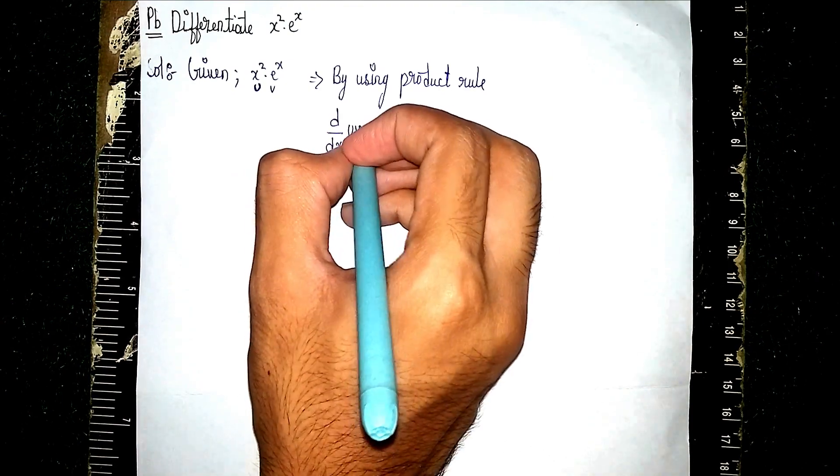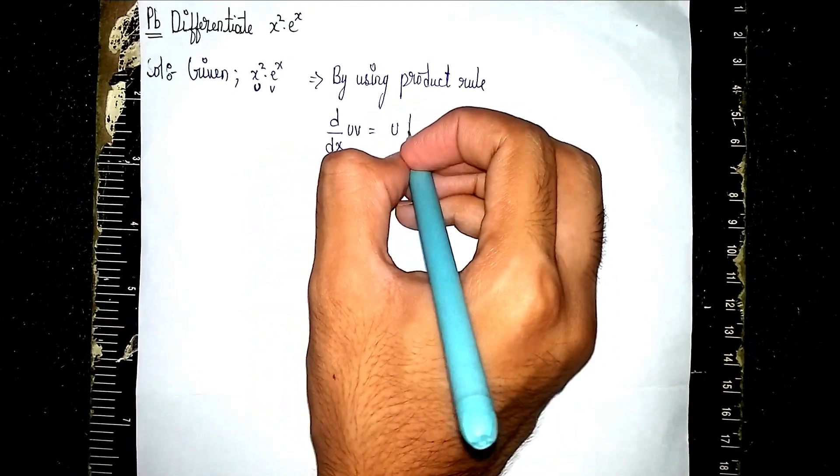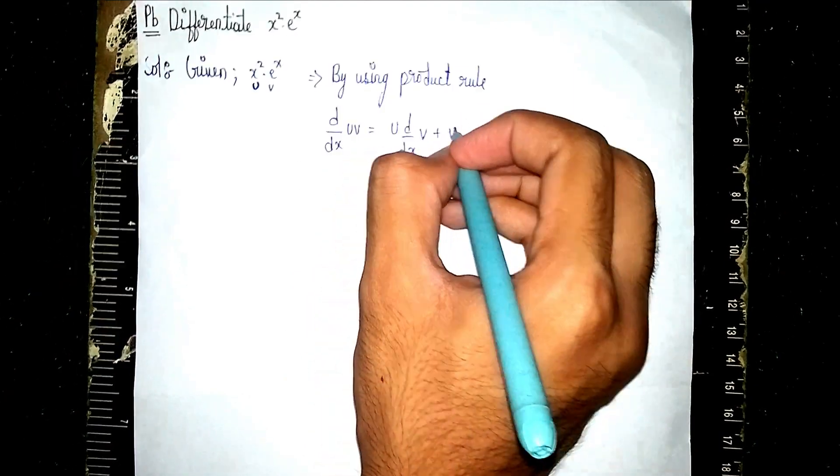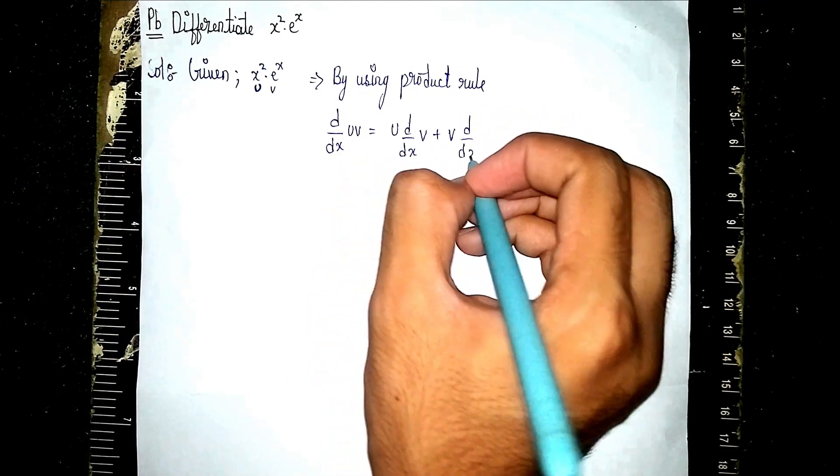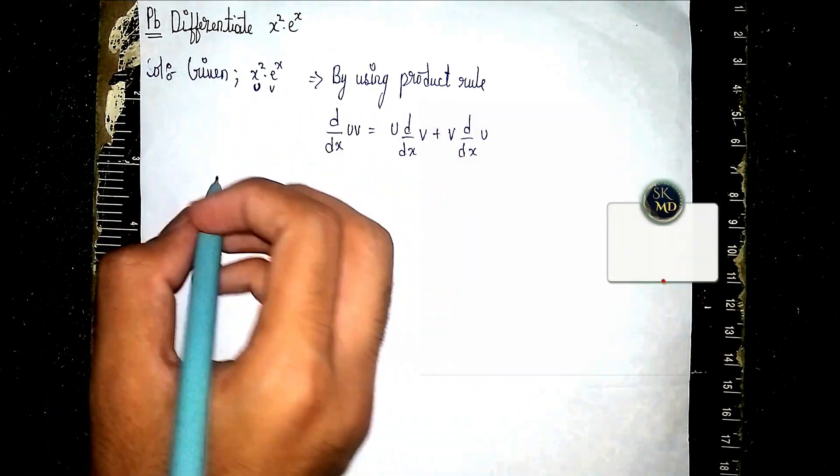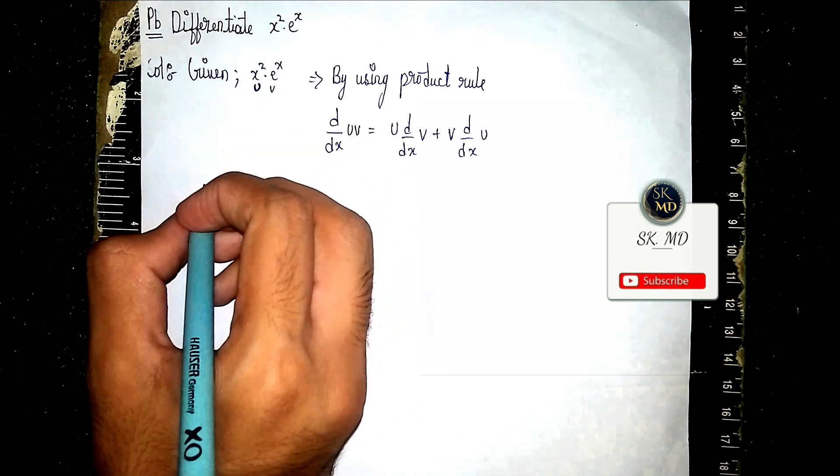d/dx of (uv) = u · d/dx(v) + v · d/dx(u). This is the formula to solve this question. Now, what is u? x².